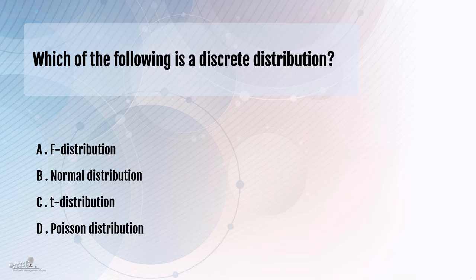A t-distribution is a sampling distribution and it resembles the normal distribution in many ways, so that is also a continuous distribution. An F-distribution is used for studying the variation in the data, and that is also a continuous distribution.